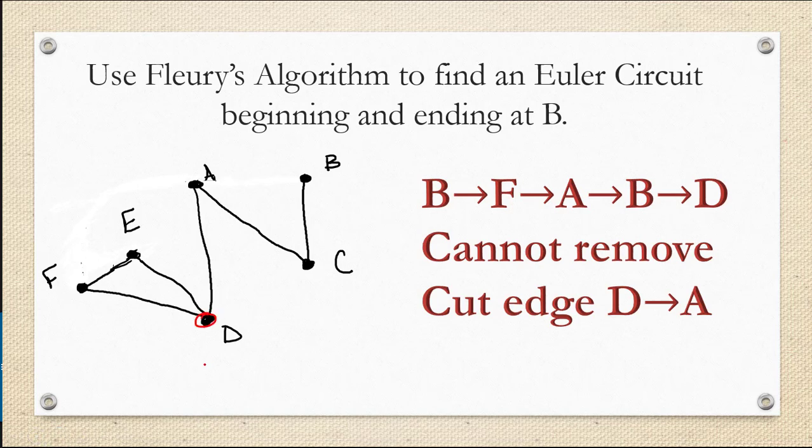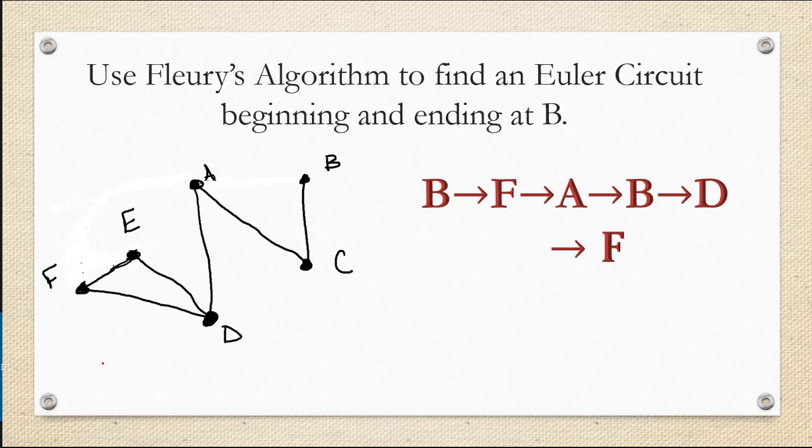But now that we're at D, we have to be careful. We can go D to F, D to E, or D to A. But notice the D to A is a cut edge. If I removed it, I would have two separate components. So I can't remove that one. So instead, I decided to go D to F. So I removed D to F.